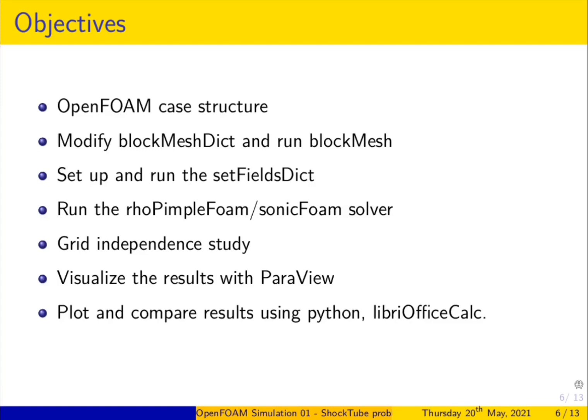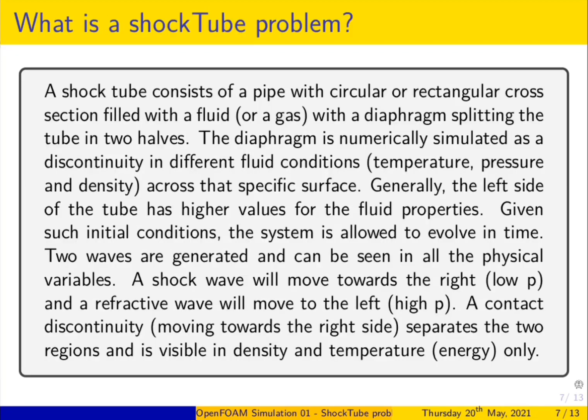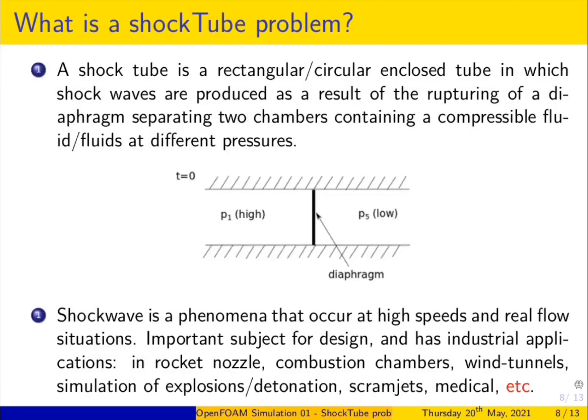We will modify blockMeshDict and run blockMesh to generate the mesh, then set up and run the setFields dictionary. We create regions in setFields and run it to initialize, then run rhoPimpleFoam, sonicFoam, or rhoCentralFoam. We will perform a grid independence study, visualize the results with ParaView, and plot and compare results using Python or LibreOffice Calc.